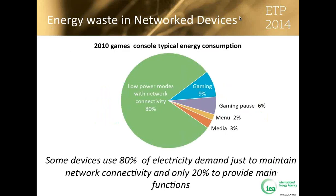ETP 2014 also explores the hidden energy implications of more devices going online. As Internet access spreads rapidly, data volumes increase exponentially, and consumer demand for smart network-enabled devices surges, so does their energy consumption. The electricity demand of network-enabled devices is expected to almost double between 2013 and 2025. Up to 80% of their electricity consumption can be needed just to maintain network connections while in standby mode. Global electricity demand of network-enabled edge devices and network equipment could be slashed by 65% by implementing best available technologies, resulting in savings of almost 740 terawatt-hours per year — about 4% of current global final electricity production.